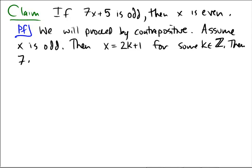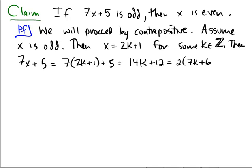Then, what's true? 7x plus 5 would be equal to 7 times 2k plus 1 plus 5, which would be 14k plus 7 plus 5, which is 12. And notice that we can factor a 2 out of there to get a 7k plus 6.